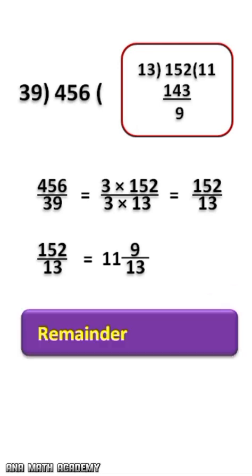So, the final remainder is 9 times 3 equals 27.